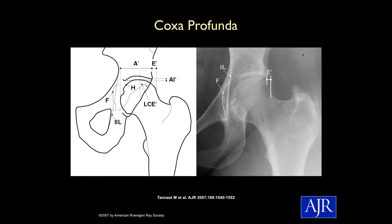Here's Tannast et al.'s example of coxa profunda, where the floor of the acetabular fossa goes past the ilio-ischial line — meaning a deep socket. There's more coverage of the femoral head, heading towards potential pincer-type impingement. Note also that the posterior wall crosses about halfway across the femoral head — that's what you expect for normal. In protrusio acetabuli, the femoral head itself goes past the ilio-ischial line, making an even deeper socket.